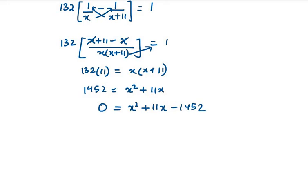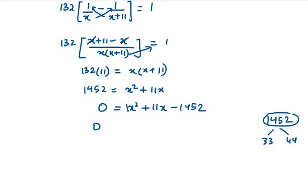Now we solve this using factorization. Here A is 1 and C is 1452, so A times C equals 1452. We need two factors of 1452 that give 11x. The factors are 33 and 44, since 33 times 44 equals 1452. So we write: x squared plus 44x minus 33x minus 1452 equals zero.